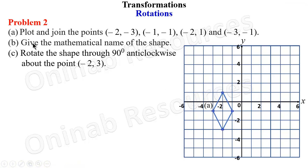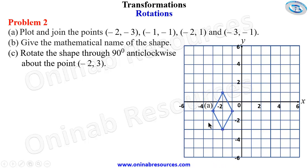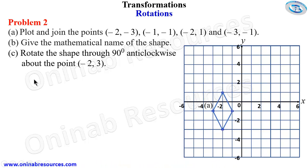Part b: give the mathematical name of the shape. This is a plane shape and the name of this shape is rhombus, because all the sides are equal. In summary, all the sides are equal, so we have it as a rhombus.